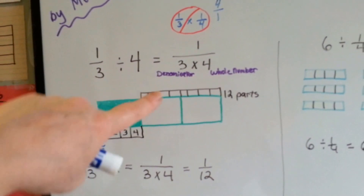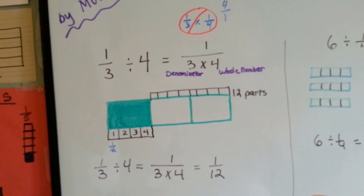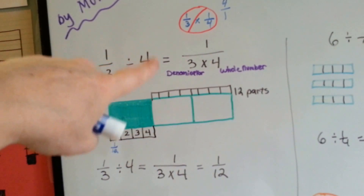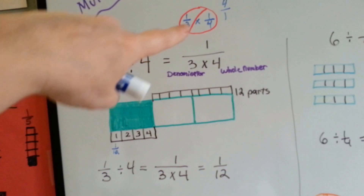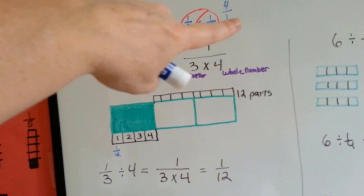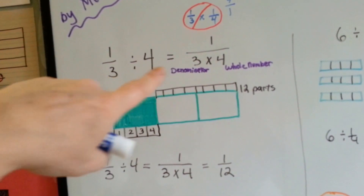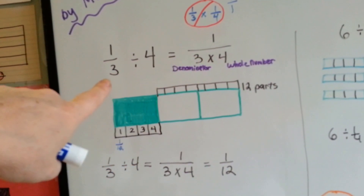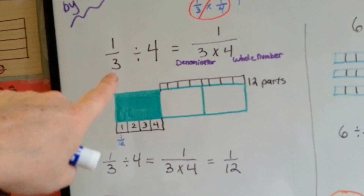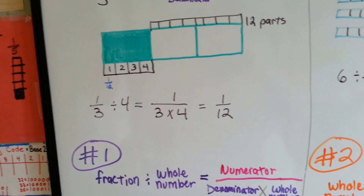Each of these would be a 12th, so the answer is 1 twelfth. Can you see why my way makes more sense? You could flip this and make the reciprocal and multiply straight across, but my way is a little quicker. You just do 1 over 3 times 4 and you've got your answer.